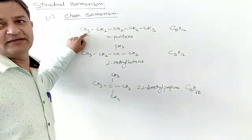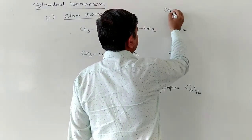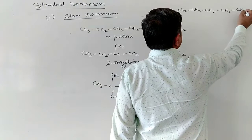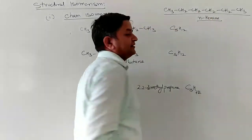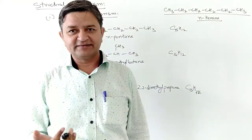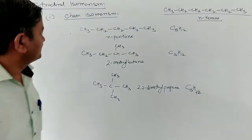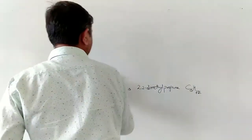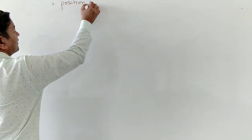Similarly, if we take hexane, for example CH3-CH2-CH2-CH2-CH2-CH3, this is normal hexane. Hexane has more than five different structural isomers. These are called nuclear or chain isomers in organic chemistry. After chain isomerism, the next type is position isomerism.